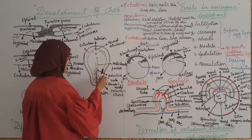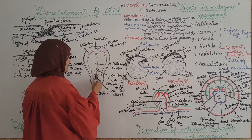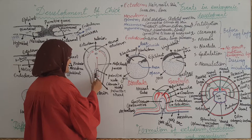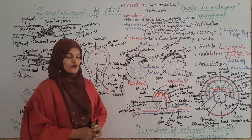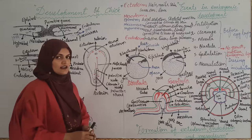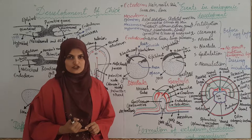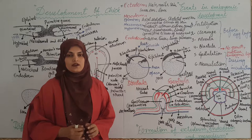When cells from the epiblast move toward the middle line of the germinal disc, a primitive groove and primitive streak are formed. These epiblast cells separate from the primitive streak and move inward and laterally, resulting in the formation of three germ layers: ectoderm, mesoderm, and endoderm.